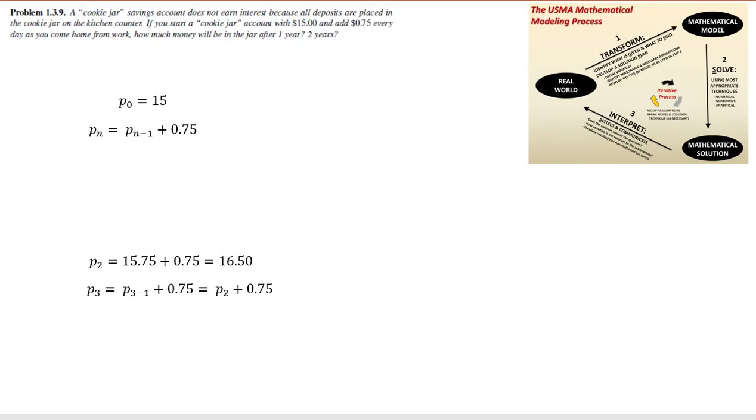We can continue to iterate as we did in the past to find p sub 3. We find p sub 3 is dependent on p sub 2 plus 0.75 and equals 17.25.